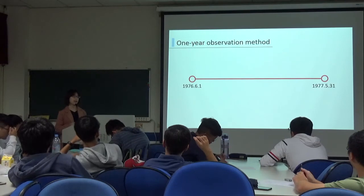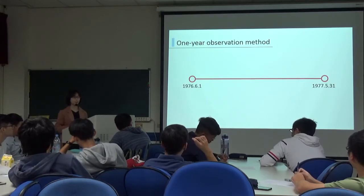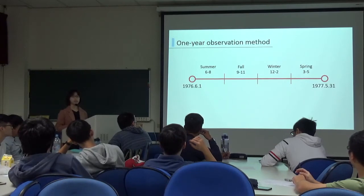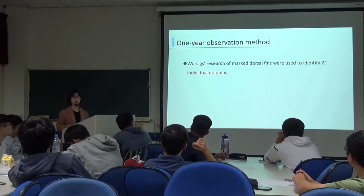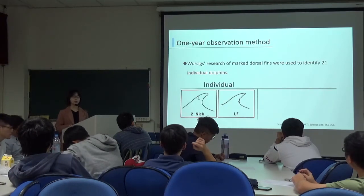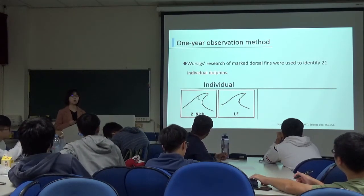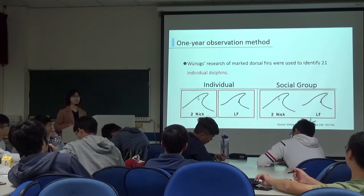Now let's move on to the one-year observation method. First, we made boat and land observations from June 1, 1966 to May 31, 1977 for one year. Besides, we defined the seasons as follows: summer is June to August, fall September to November, winter December to February, and spring is March to May. Next, we took photo-ID research of dolphin fins to identify 21 individual dolphins. The word 'individual' in this study means within the population using skin pigment spots or scar tissue on the dorsal fin to identify them as one individual.